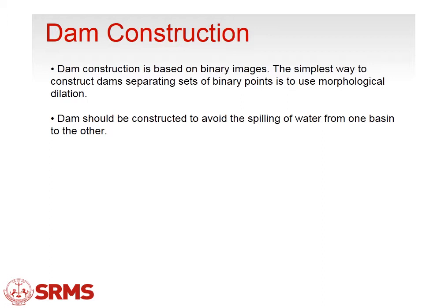Dam construction is useful for any image having different kinds of grayscale levels with values ranging from 0 to 255. Dam construction is based on binary images, meaning values of 0 and 1 only. The simplest way to construct a dam separating a set of binary points is to use morphological dilation. Dams should be constructed to avoid the spilling of water from one basin to another, as studied in the Part 3 video of Unit 4.